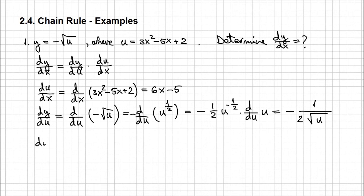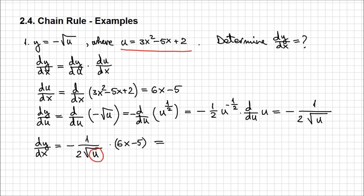Now we are ready to determine dy/dx: it's minus 1 over 2 square root of u, times the other expression we found, which was 6x minus 5. Of course, we have to replace u with its expression in regards to x, so we get minus (6x minus 5) over 2 times square root of (3x squared minus 5x plus 2). And this is our final result.